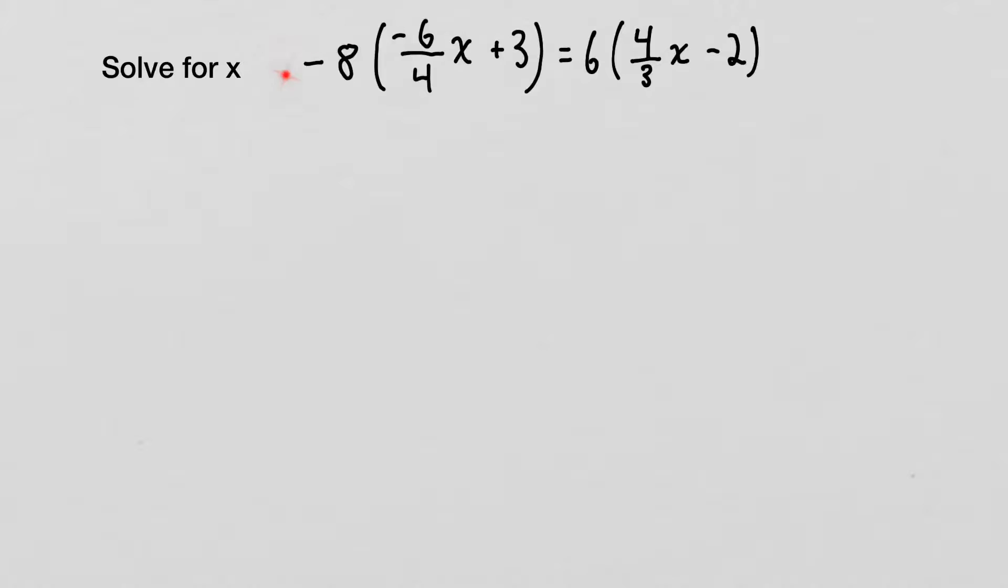Okay, let's get started. So, negative 8 times negative 6. Well, two negatives multiplied together make a positive. So 6 times 8 gives us 48. So 48x, because we keep that x there, plus negative 8 times positive 3. Well, negative times a positive leaves a negative, and 3 times 8 is 24. So we get negative 24.